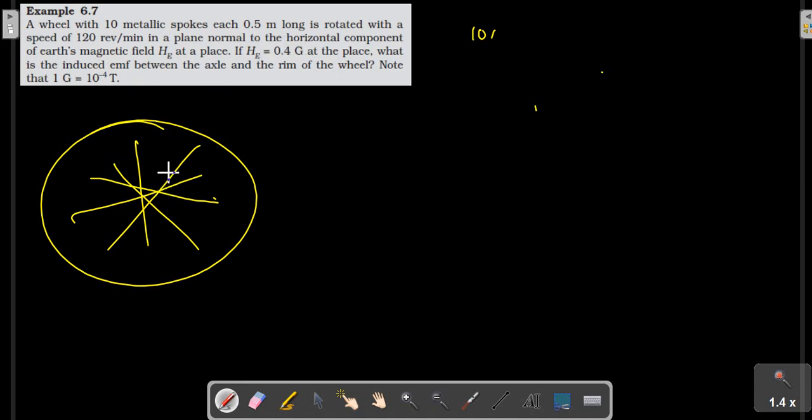And the spokes are 0.5 meters long, rotating with speed omega given as 120 into 2π over 60, which equals 4π radians per second.